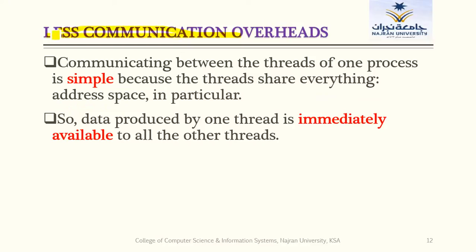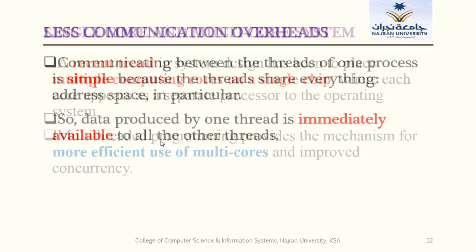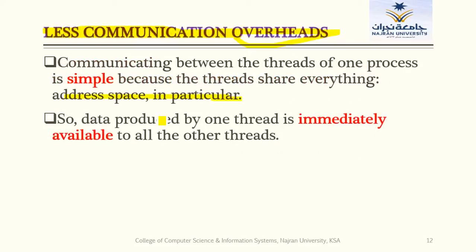The fifth benefit is less communication overhead. Communicating between threads of one process is simple because the threads share everything, including address space. That is why they can easily communicate with each other. Just like classmates at a university who can communicate easily every day, threads of the same process can communicate easily. If we compare with processes of a different subject or program, communication is harder. This is another reason we use multi-threaded programming — the communication overhead is less.